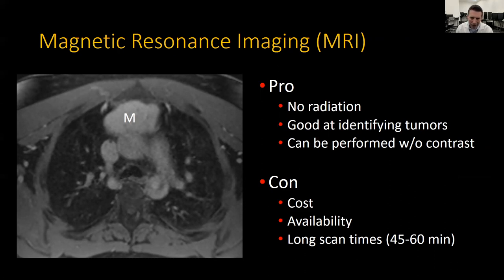The cons of MRI are significant, however. MRI scans are very expensive, and due to the high cost to purchase and maintain MRI machines, they're not always available in every location. Scan times are significantly longer than CT, often running 45 to 60 minutes. Given that MRI scans are very sensitive to motion and lying still for 45 to 60 minutes is very difficult, these studies can be demanding for some patients.